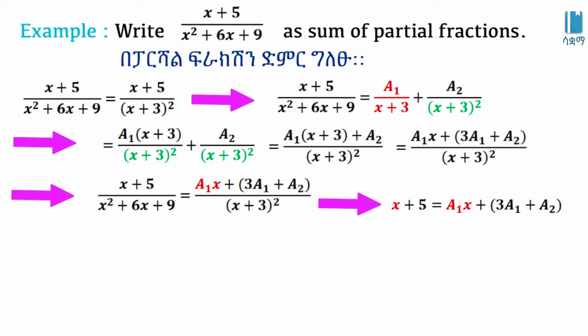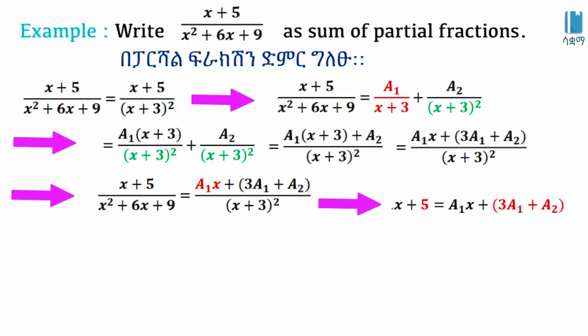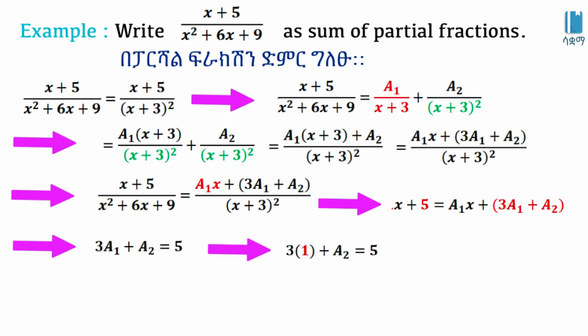Comparing both sides, we look at the x coefficient. The x coefficient gives us A1. For the constant term, we get 3 times A1 plus A2. So from the constant comparison: 3 times A1 plus A2 equals the constant on the left side.